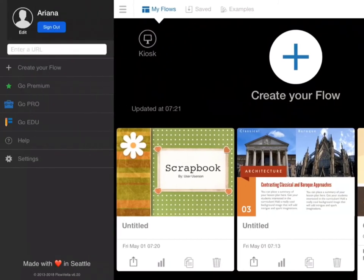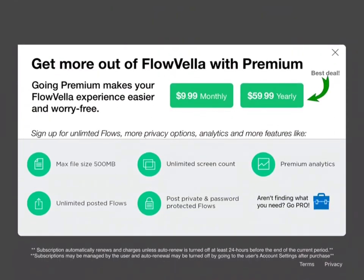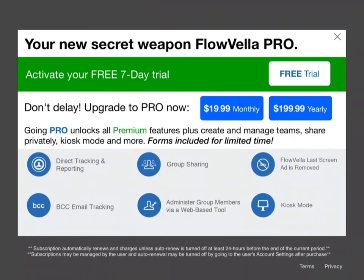Here on the left-hand side, you'll see your name, add a picture, sign out, enter a URL, and create your flow. If you go premium, you can pay $10 monthly or $60 yearly. It includes max file size of 500MB, unlimited post flows, unlimited screen count, post private and password-protected flows, and premium analytics. If you don't find what you need, you can go pro — paying $20 monthly or $200 yearly.